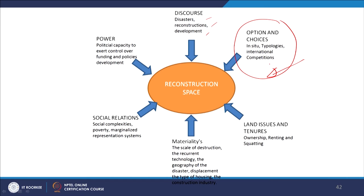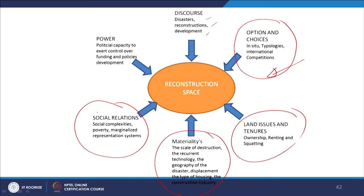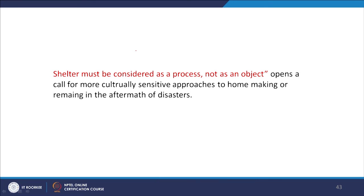Further forces in the reconstruction diagram include: materiality, scale of destruction, recurrent technology, geography of the disaster, displacement, type of housing, and construction systems. Social relationships, social complexities, and poverty all factor in — poverty has a direct equation with disaster risk and vulnerability, with marginalized communities most often affected. Power — whether local government, agencies, or feudal systems — frames how development is conceived. The political capacity to exert control over funding and policies shapes everything.